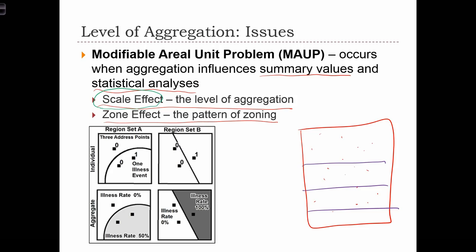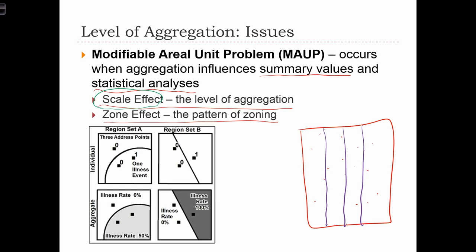We could have done it into four zones like this — one, two, three, four — or like this — one, two, three, four. Technically, the scale of all of these different zoning systems are the same: each zone has the same area, and there are four different zones in each way we divided the study area. But the result of our analysis will change depending on how we draw these zonal boundaries. That's going to be called the zone effect.